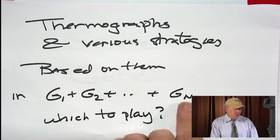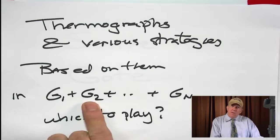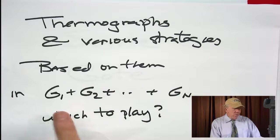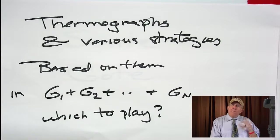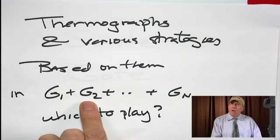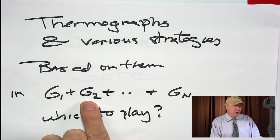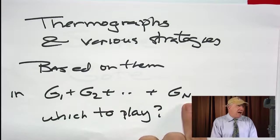So you have a sum of all these games, do we play in G2 first, or GN, or G1, or whatever. And if our opponent plays in G2, should we respond in G2, or go to a different game?